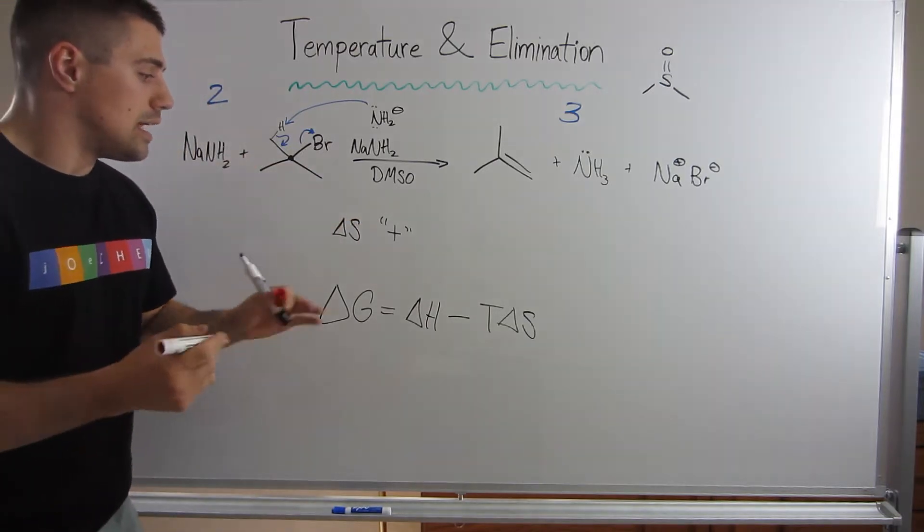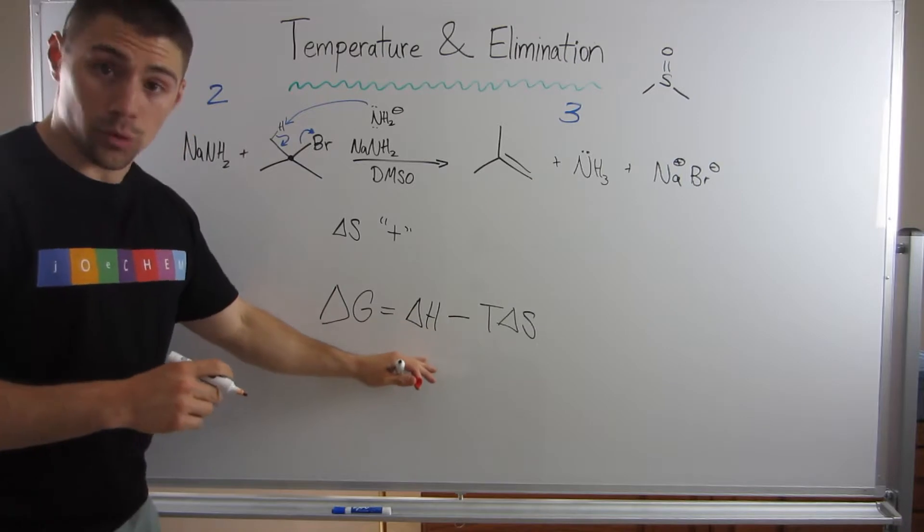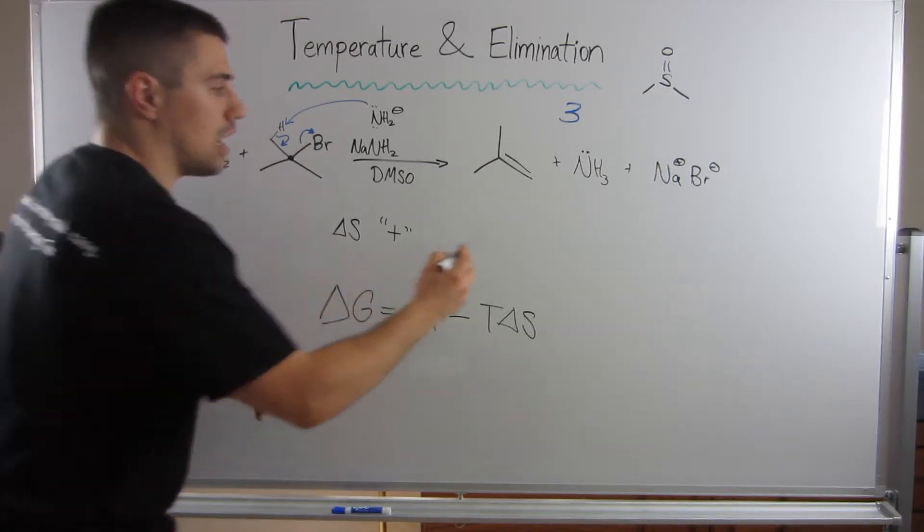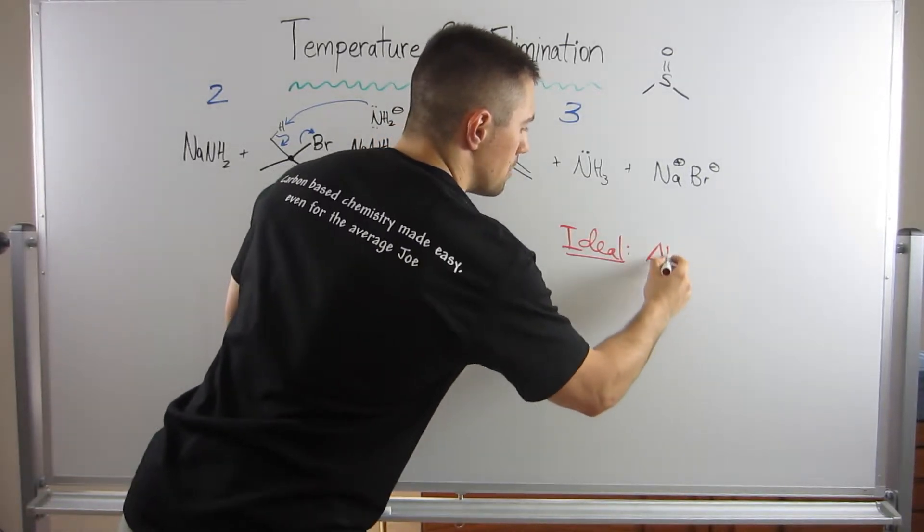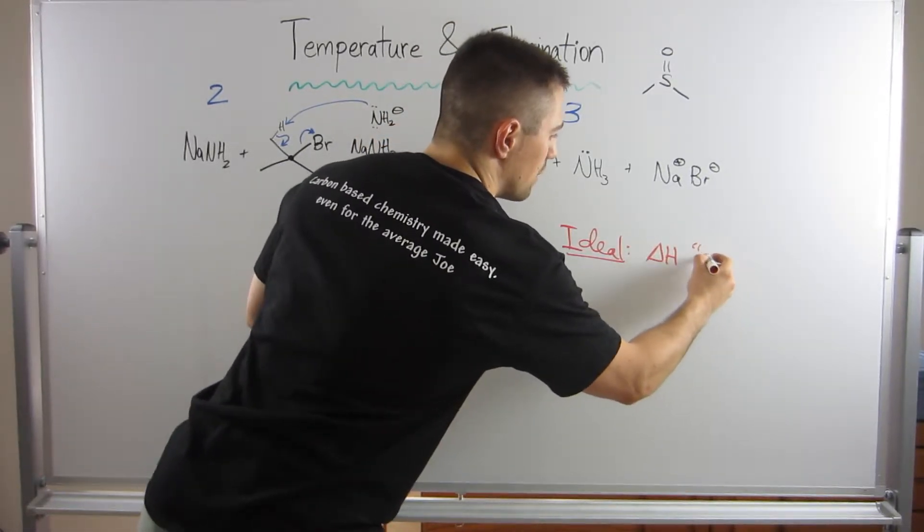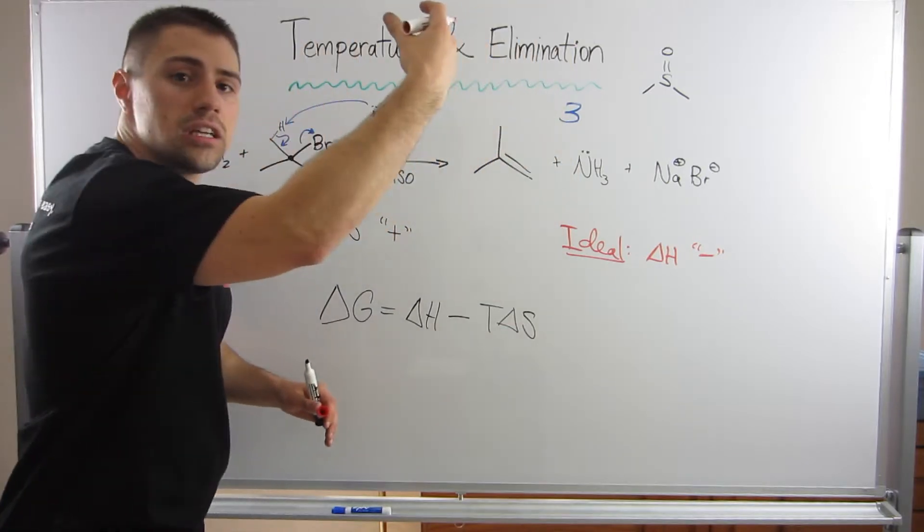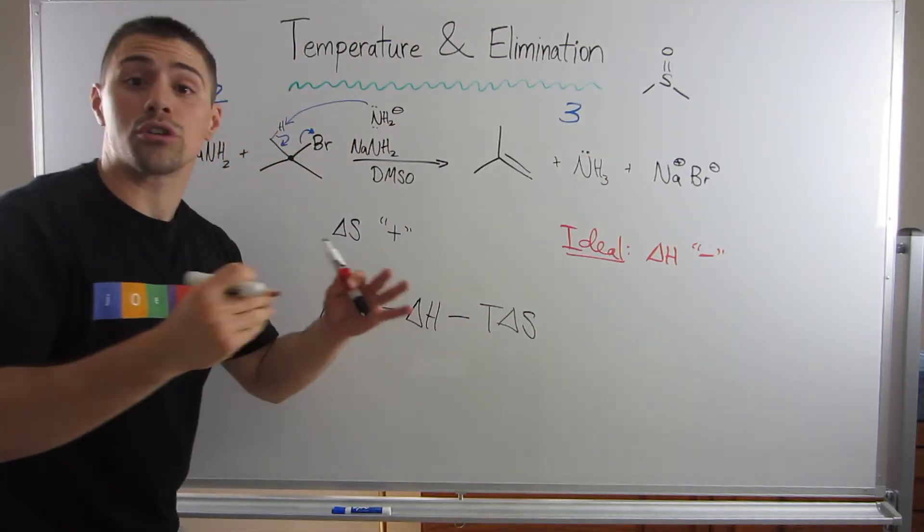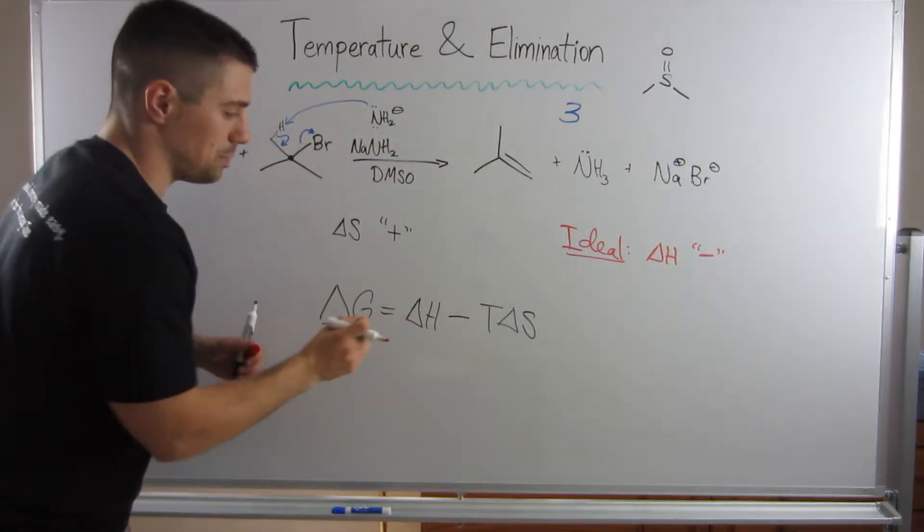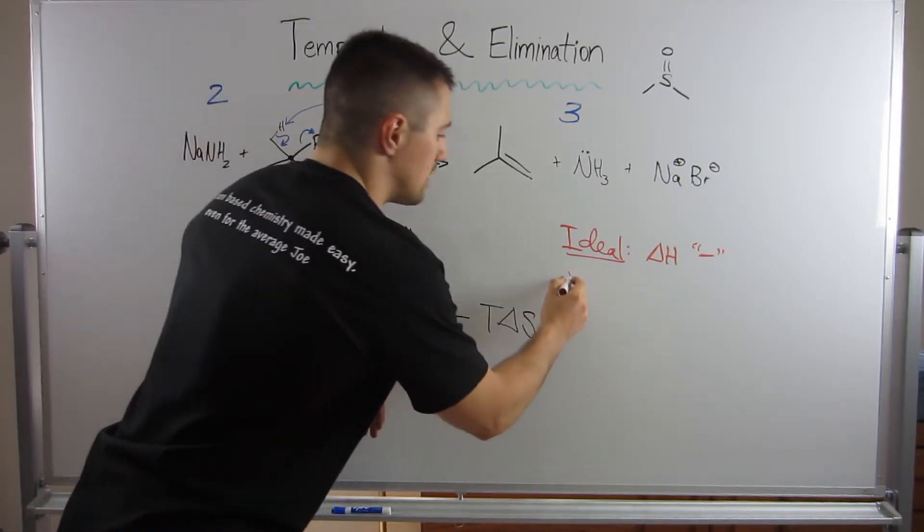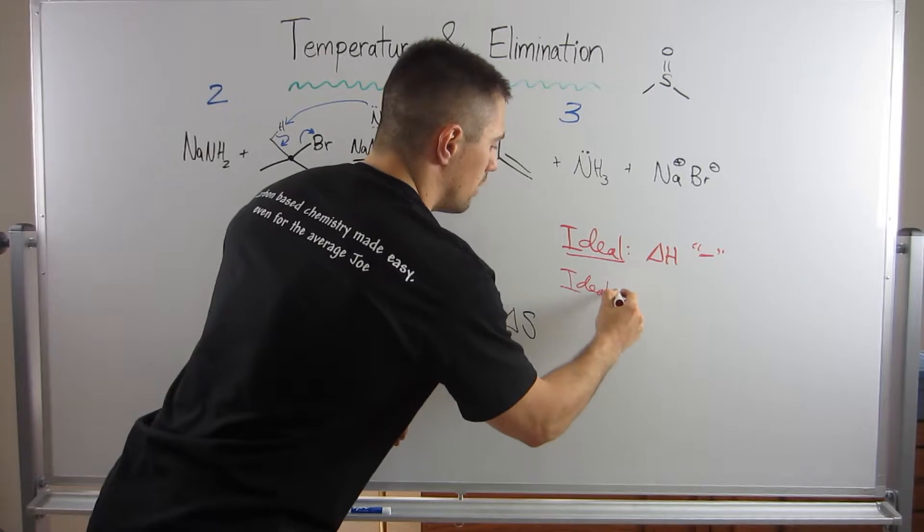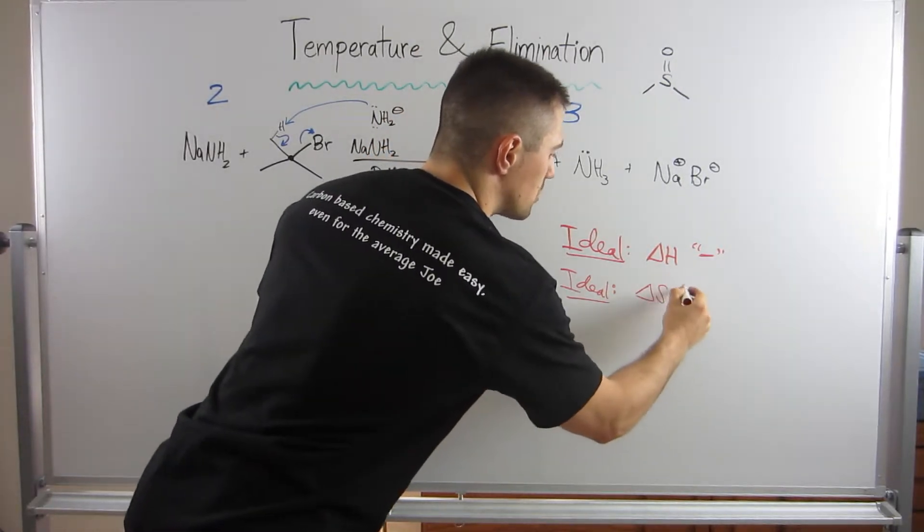We know in terms of enthalpy, we know it is ideal that Delta H is negative. Systems giving off energy, going to a lower energy state, more stable. That's what we like Delta H to be. We like Delta S to be positive. That is ideal for Delta S. That means we're moving to more disorder.